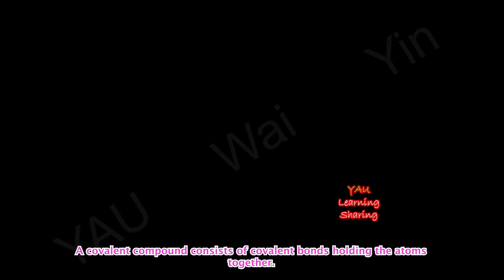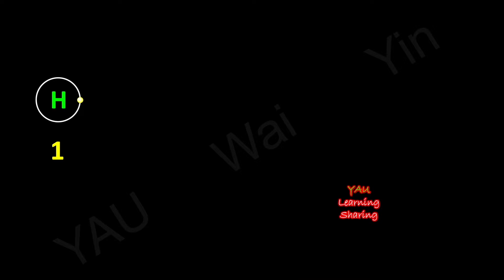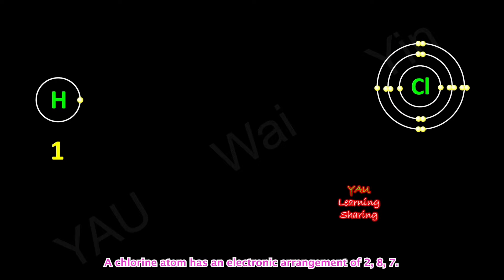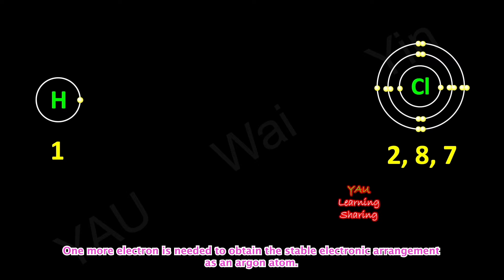A covalent compound consists of covalent bonds holding the atoms together. For example, a hydrogen atom has an electronic arrangement of one — one more electron is needed to obtain the stable electronic arrangement of a helium atom. A chlorine atom has an electronic arrangement of two, eight, seven — one more electron is needed to obtain the stable electronic arrangement of an argon atom.